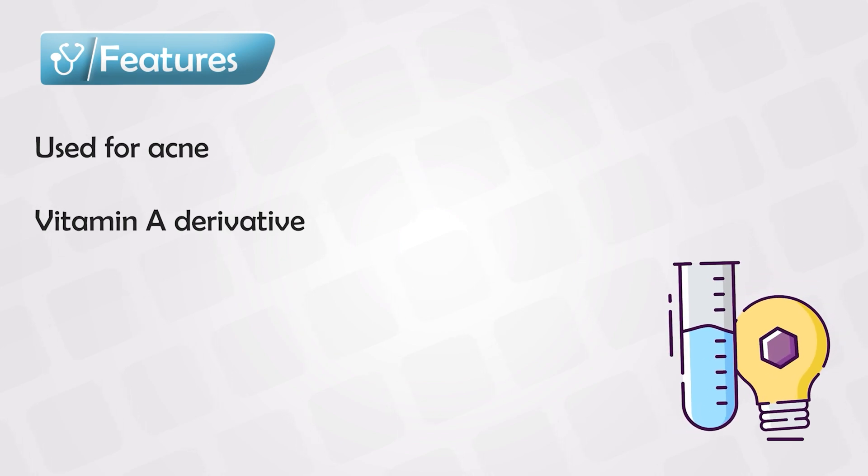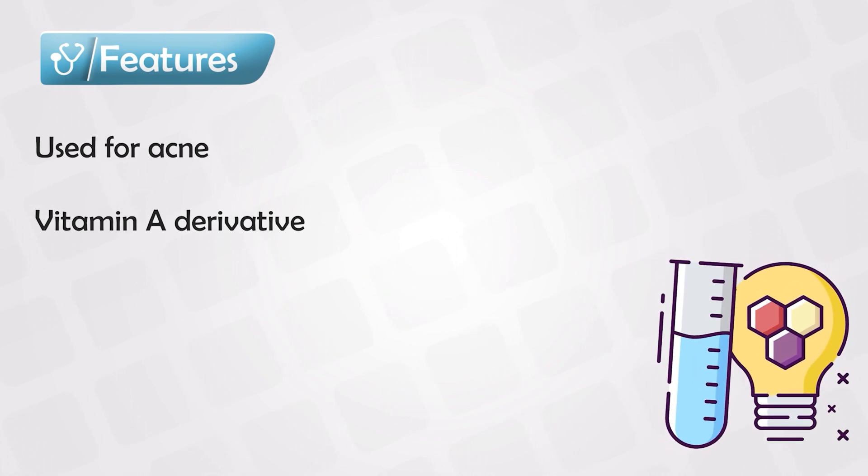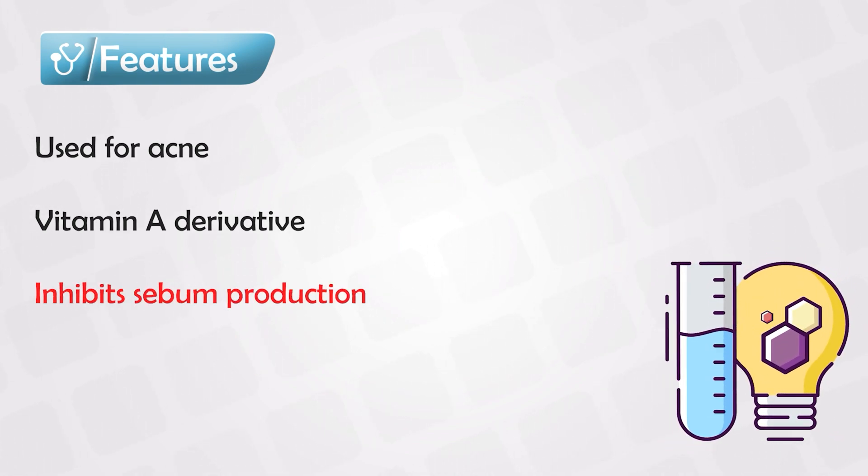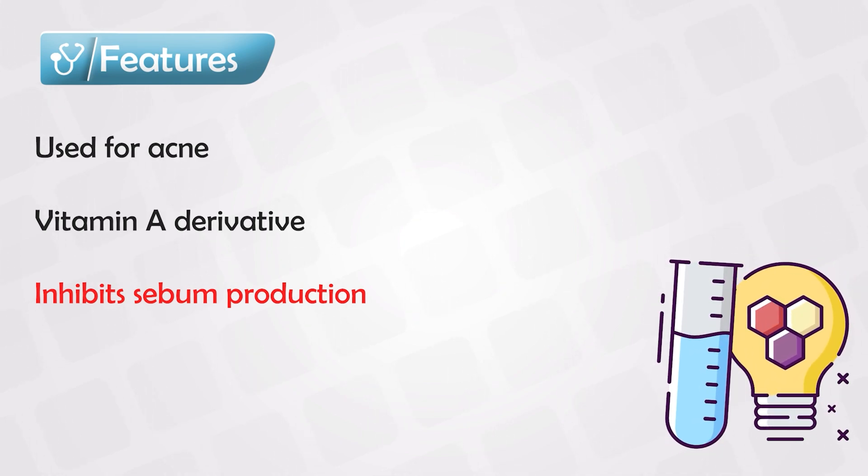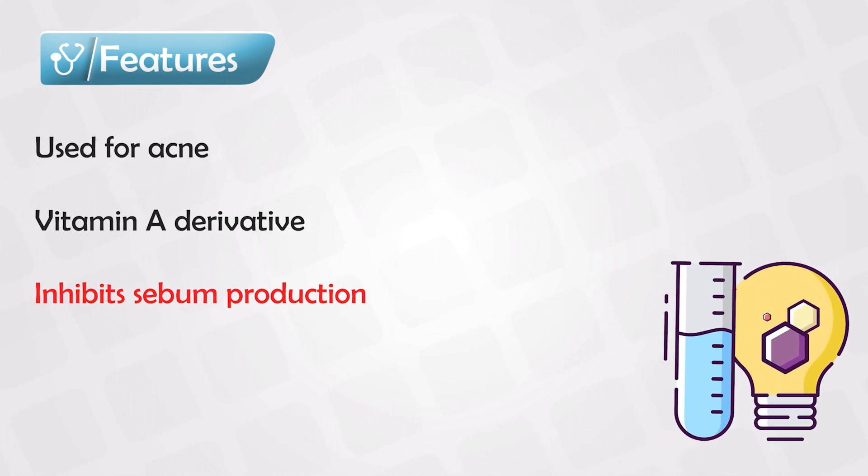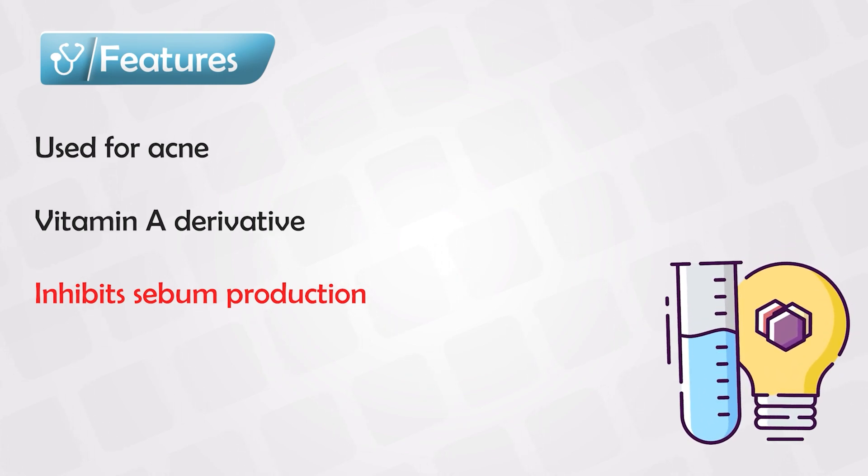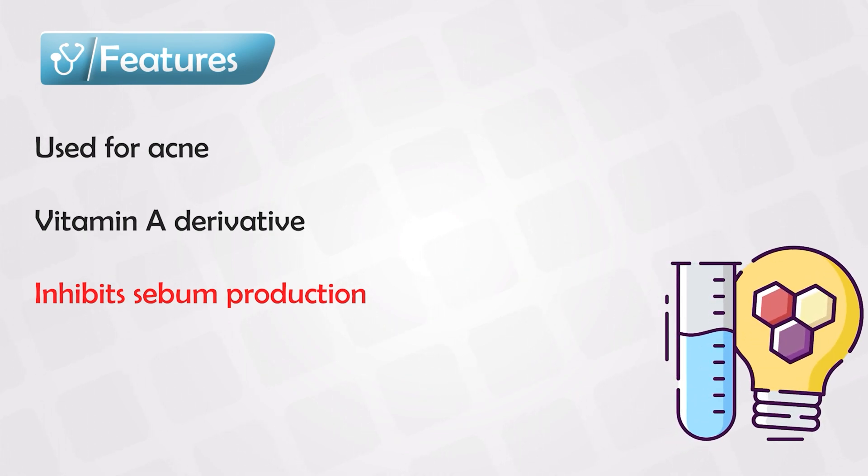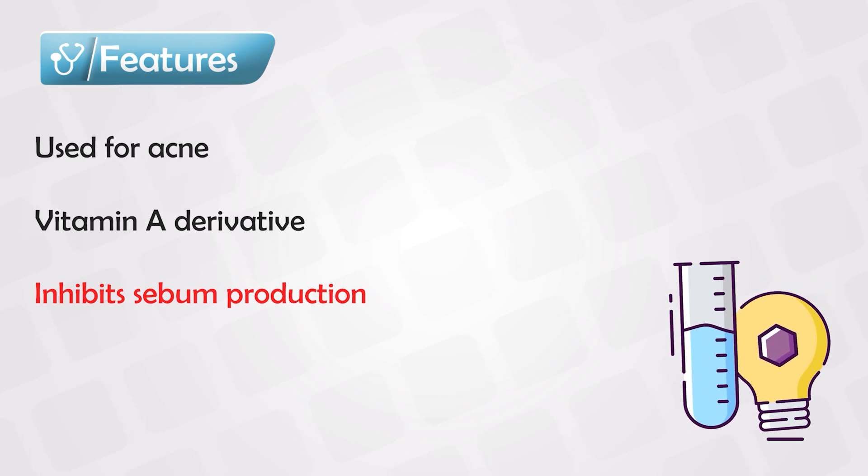The main effect of isotretinoin is achieved by reducing the sebum production. So the first stage of acne formation, which is blocking of these open structures, might still occur. But there will be nothing produced and nothing accumulated, so the bacteria will have nothing to grow on.